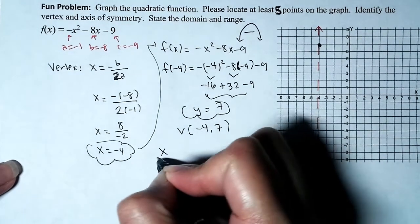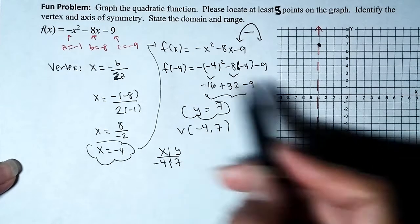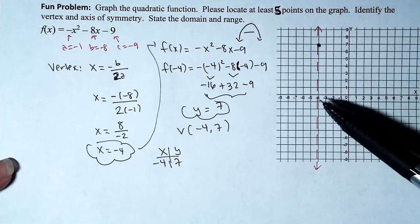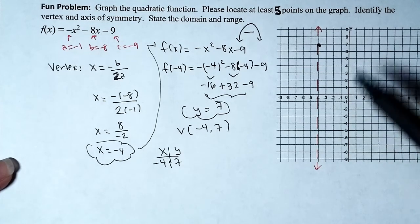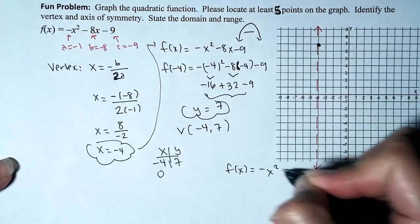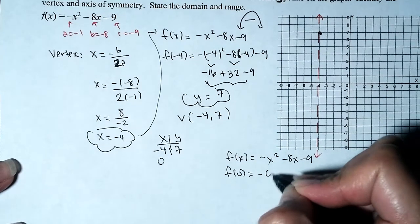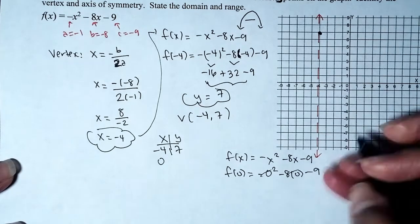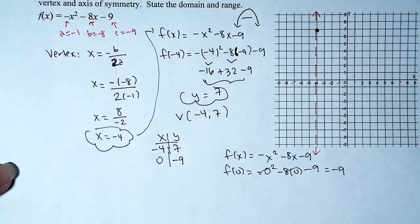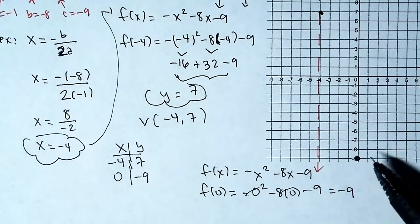Let's make a table of values. The first x-value is negative 4, giving y equals 7 — already done. Next, let's use my favorite x-value: zero. The function is negative x² minus 8x minus 9. When x is zero, f(0) equals negative 0 minus 0 minus 9, which equals negative 9. So the point is (0, negative 9).